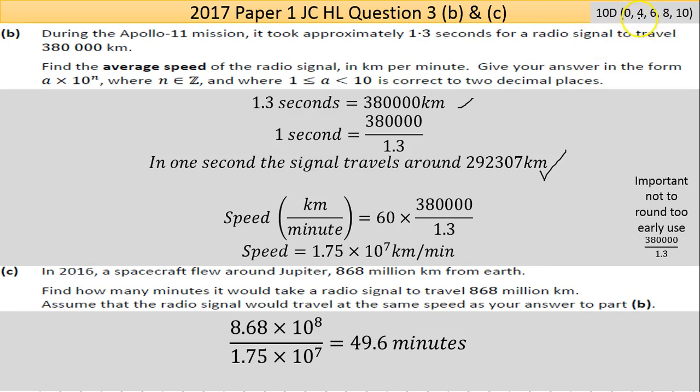So my speed in kilometers per minute: I can get that by multiplying my speed here—380,000 over 1.3—times 60. I end up with 1.75 times 10 to the power of 7. That's the speed in one minute.